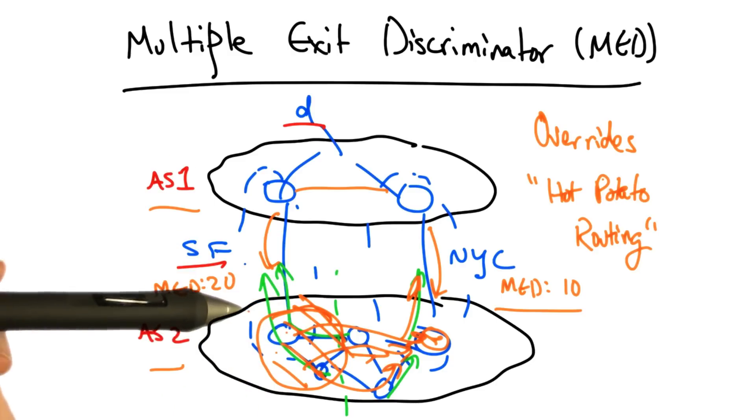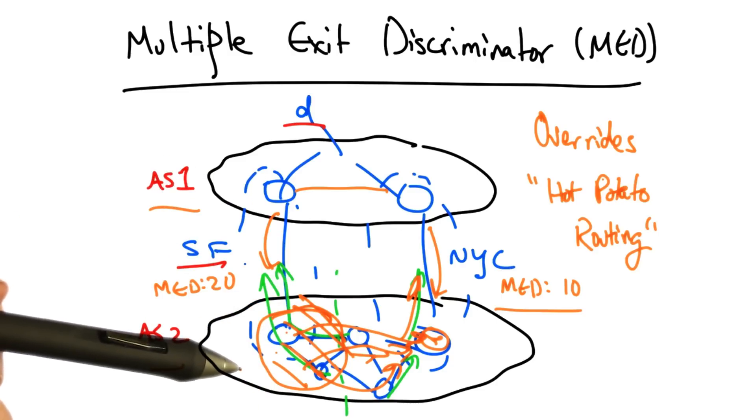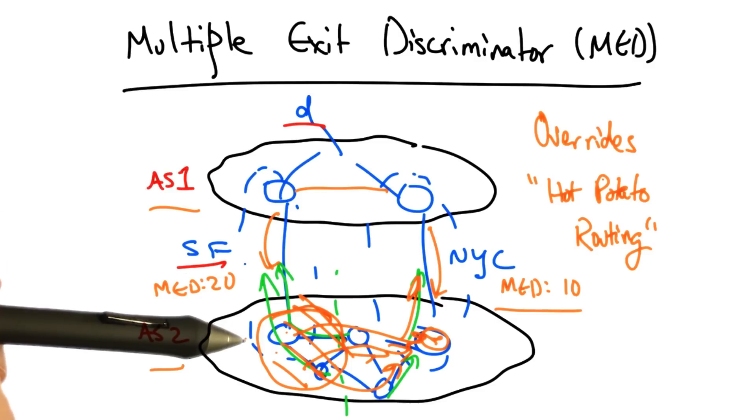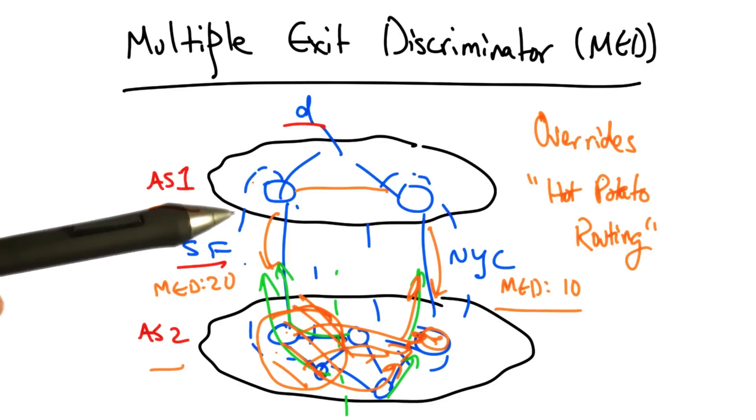This mechanism is sometimes used when a transit provider peers with a content provider, and the transit provider doesn't want the content provider essentially getting free transit through the neighboring AS.